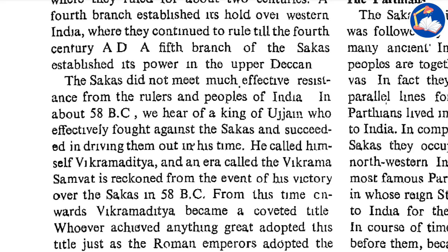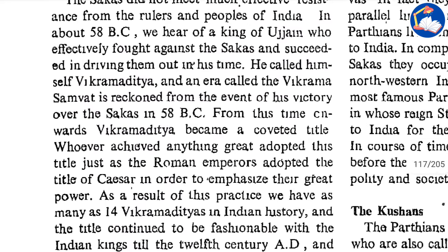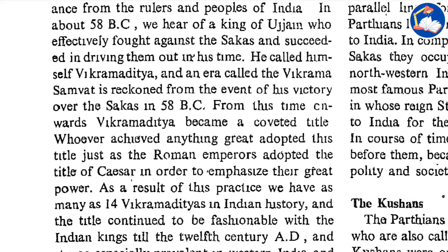The Sakas did not meet much effective resistance from the rulers and peoples of India. In about 58 BC, we hear of the king of Ujjain who effectively fought against the Sakas and succeeded in driving them out. He called himself Vikramaditya. An era called Vikrama Samvat was reckoned from the event of his victory over the Sakas. From that time onwards, Vikramaditya became a coveted title.